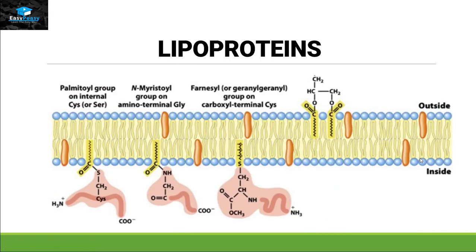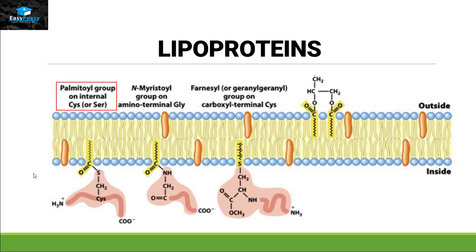Lipoproteins: lipoproteins are proteins to which a lipid is attached. All proteins that need to attach themselves to the cell membrane, either inside or outside, need a part of the lipid family attached to them, because lipids are hydrophobic and the attachment of a protein to the cell membrane cannot be done without attachment to the lipid family. There are three different types of linkage: the palmitoyl group on internal cysteine or serine, the myristoyl group on glycine, and the farnesyl group on the carboxy terminal of cysteine. Through these three types of attachment, the protein anchors itself to the cell membrane.